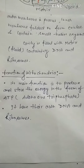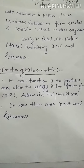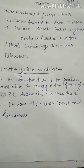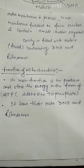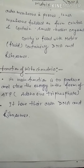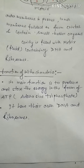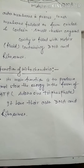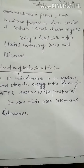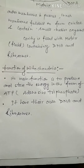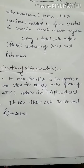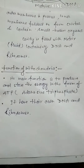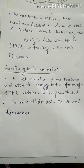The main function of mitochondria is to produce and store energy in the form of ATP — adenosine triphosphate. ATP is also called the energy currency of the cell. Mitochondria also have their own DNA and ribosomes.